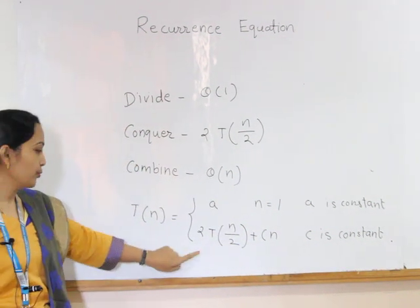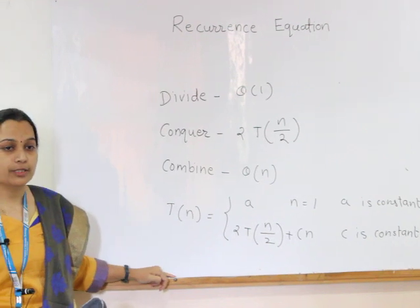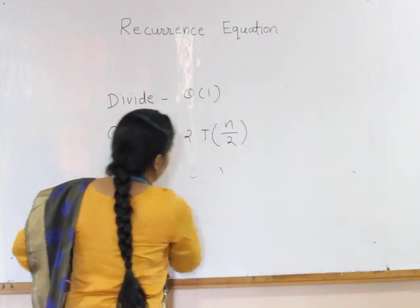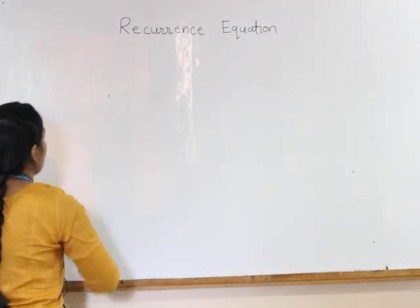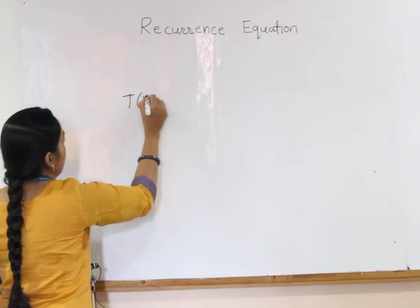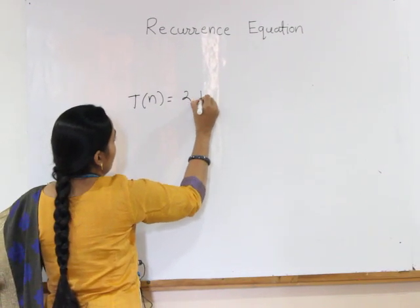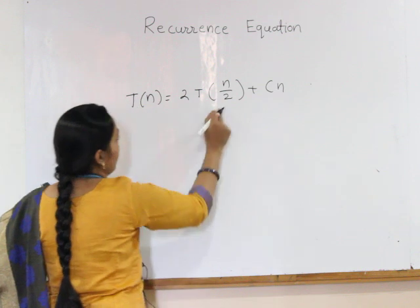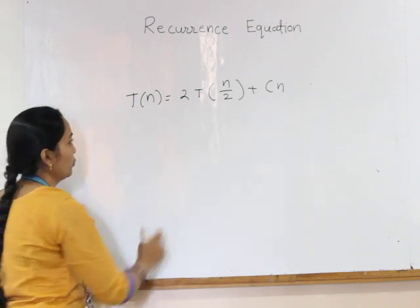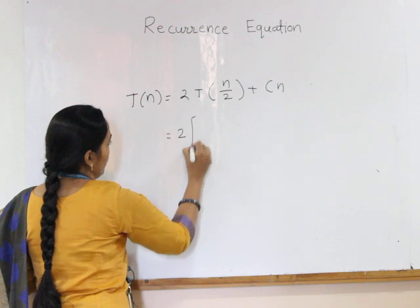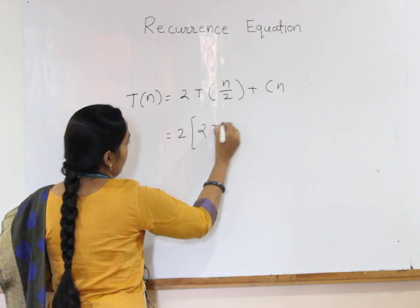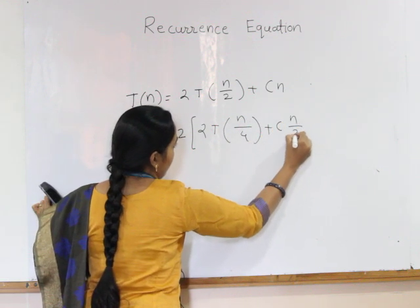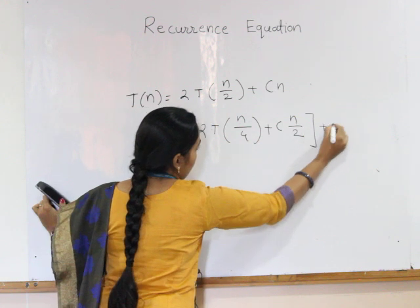Now, we are going to solve this recurrence equation by using the substitution method. I will first write again this recurrence equation as T of n equals 2T of n by 2 plus cn. We replace this T of n by 2 by taking 2 out of the box: 2T of n by 4 plus cn by 2 plus cn.